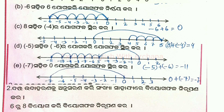Then the next number: minus 7. Starting at 0 on the number line and adding minus 7 — 0 plus minus 7 equals minus 7.